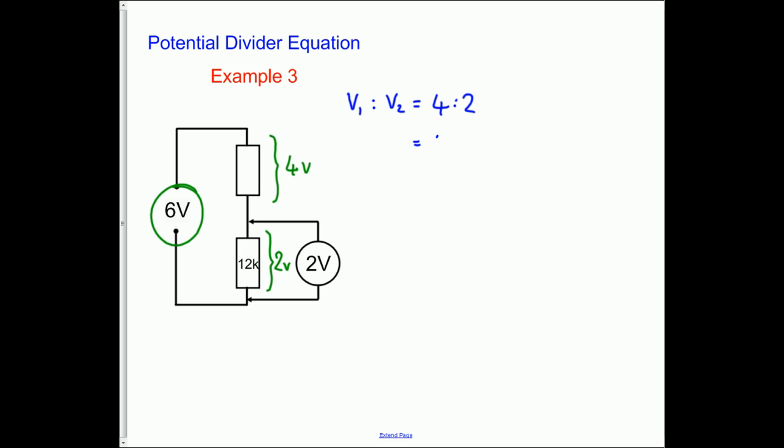4 to 2 which is the ratio 2 to 1 and therefore the resistors must be in the ratio of 2 to 1. We know that R2 is simply 12k and therefore R1 to 12k must be in the ratio 2 to 1. R1 is twice as big as R2. So R1 is therefore 24 kilo ohms. Job done again.